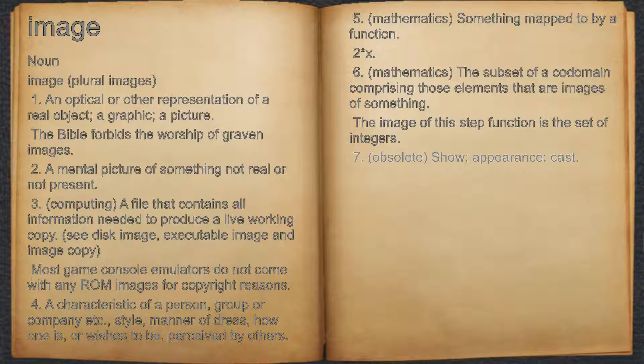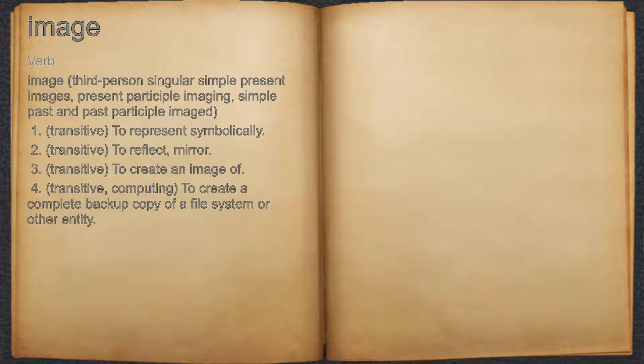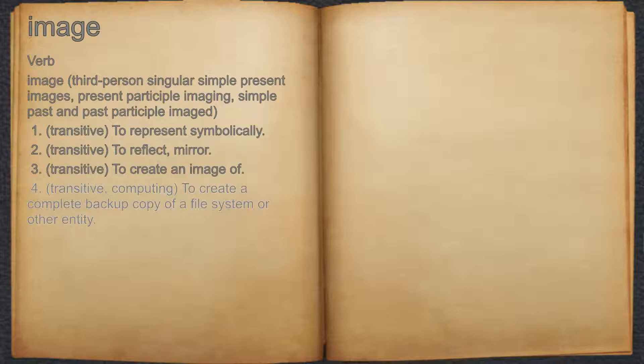7. Obsolete, show, appearance, cast. Image, verb. 1. Transitive, to represent symbolically. 2. Transitive, to reflect, mirror. 3. Transitive, to create an image of. 4. Transitive, to create a complete backup copy of a file system or other entity.